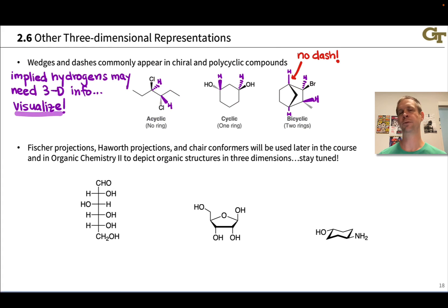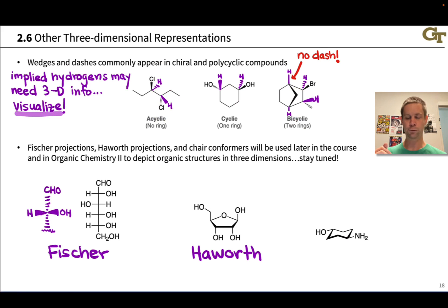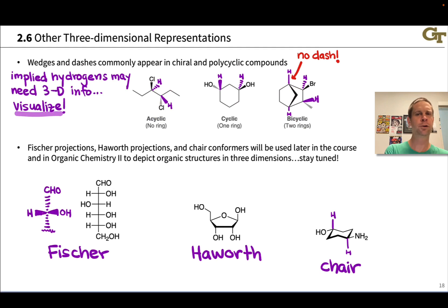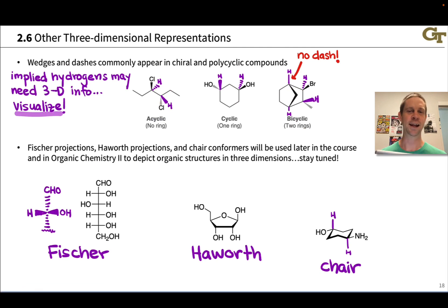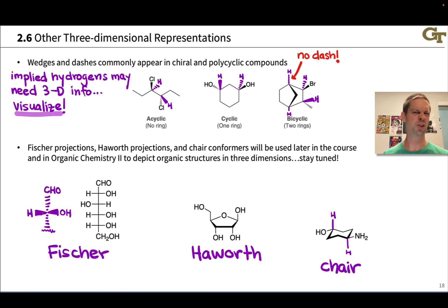We'll use other conventions for representing molecules in three dimensions later in the course. Three of them are shown here: Fischer projections, Haworth projections, and chair structures. Fischer projections are the oldest of these conventions and have survived in carbohydrate chemistry. Haworth and chair projections have three-dimensional information built in. We'll tackle the details of these when we get to them later in the study of organic chemistry.